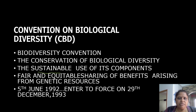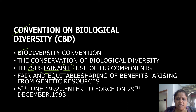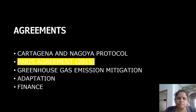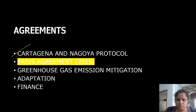The Convention on Biological Diversity focuses on biodiversity and uses the concept of sustainable development. It discusses conservation and the equitable sharing of benefits arising from genetic resources. It was signed on 5th June 1992 and came into force on 29th December 1993 — these dates are important to remember. The Cartagena and Nagoya Protocols are agreements under this convention, and MCQ questions frequently come from this topic.